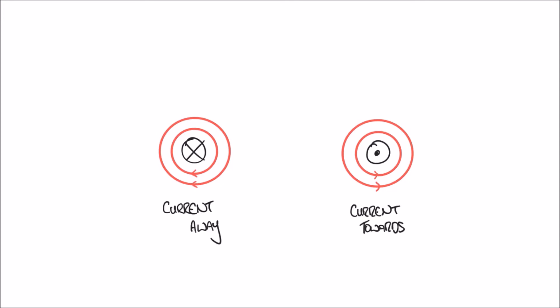So to summarize: a current traveling away from us gives a clockwise magnetic field from our perspective, and a current traveling towards us gives an anti-clockwise magnetic field.